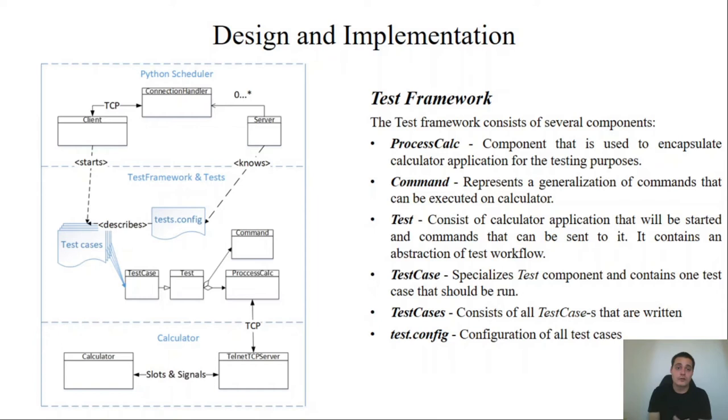Next component of the system is testing framework. It consists of several components. We have process calculator. It encapsulates the process calculator, so it can start the calculator, it can end it, it can send some commands, etc. We have a command that is the generalization of any command used in a system. We have a test that is the generalization of one test. We have a test case which represents the specialization of test and it represents one test case in our system. Test cases are all test cases that are there in the system. And we have one file which we use that tests config. It is the configuration of all the test cases in the system.